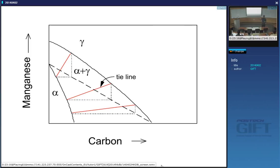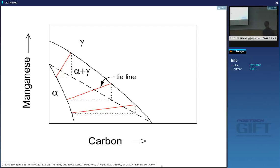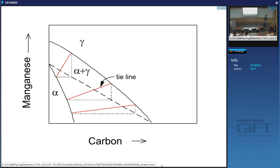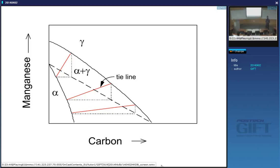Why can't you choose a tie line different from these two? Because it won't satisfy the diffusion equations. If you are moving at a rate which is controlled by carbon, it will not be consistent with manganese, and if you are moving at a rate controlled by manganese, it won't be consistent with carbon. There is only one interface. So actually, both solutes are controlling the movement of the interface — and this applies even if you have ten different elements.